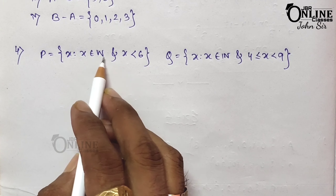Now A complement intersection B complement. A complement = Xi minus A = {0, 1, 2, 3, 4}. B complement = Xi minus B = {0, 1, 2, 8, 9, 10}. The intersection of these two is {0, 1, 2}. So left hand side equals right hand side — it's proved.